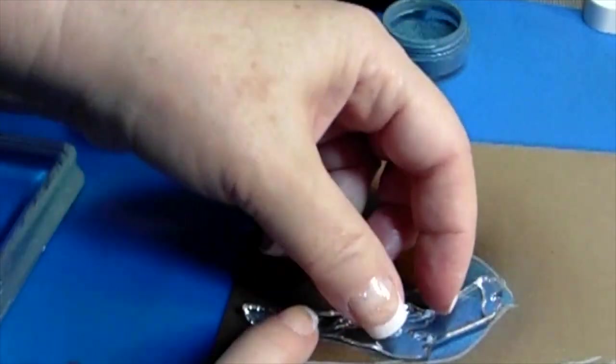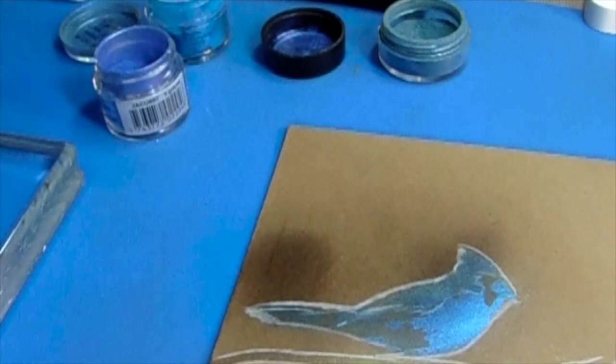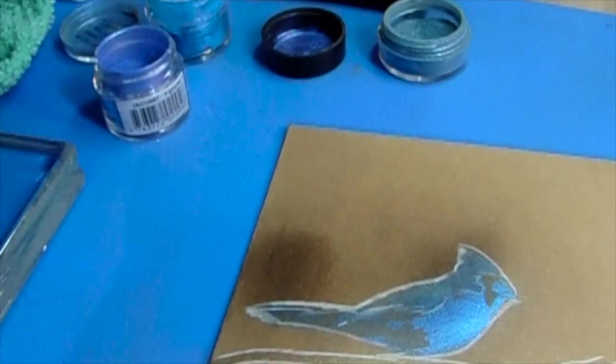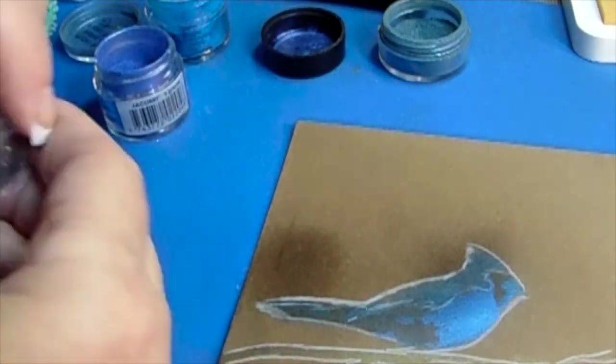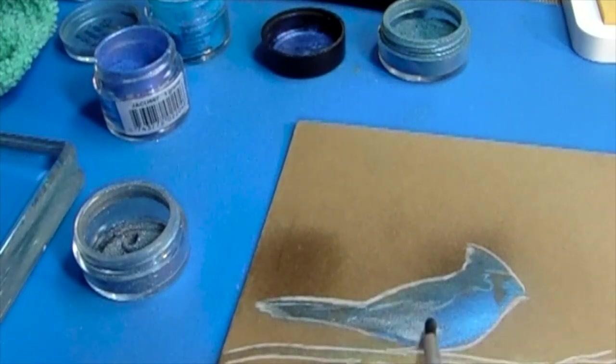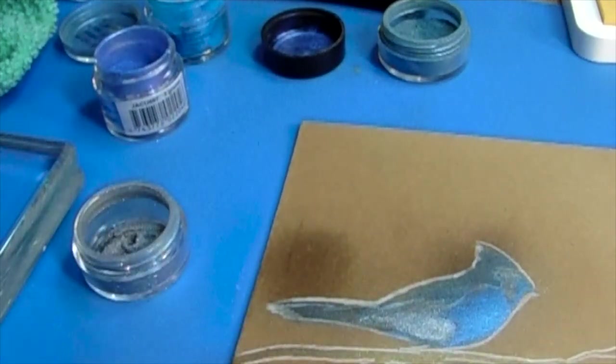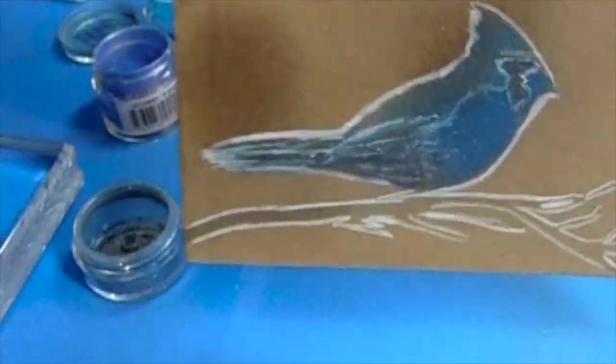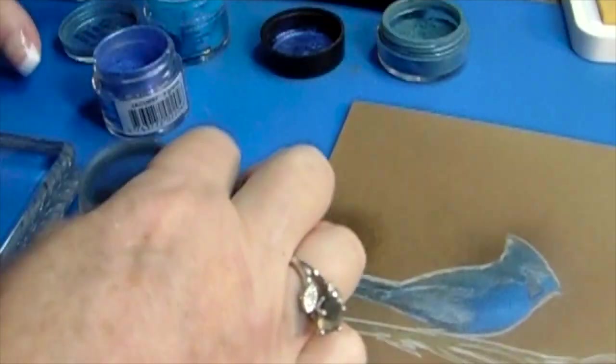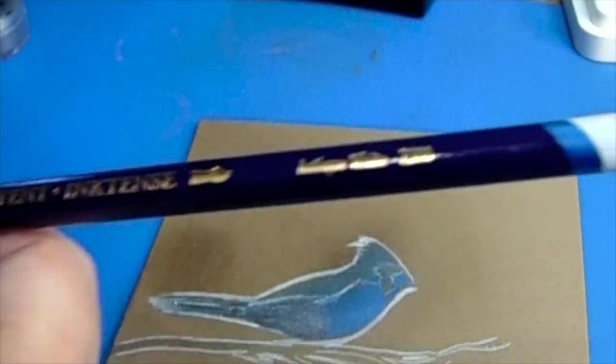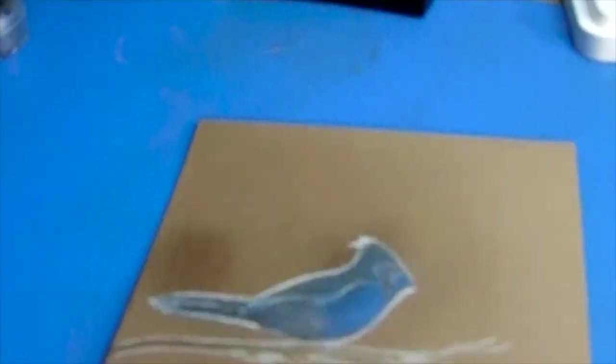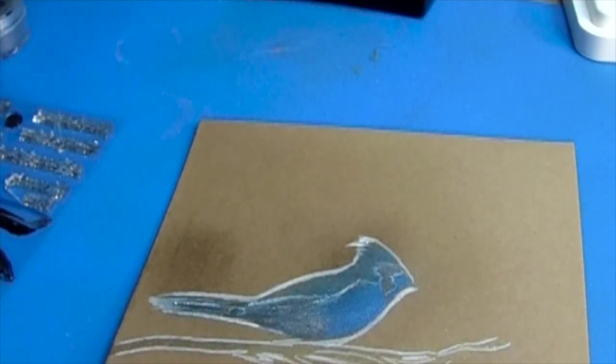Now we're going to apply the last, which is the fourth image. I'm going to apply this with the Perfect Pearl medium because this is going to be the actual feathers, and I'm using a silver gray on this. It's stunning with the blue and the greens. I'll take the Inktense white pencil to outline the feathers to give it a little bit more dimension.